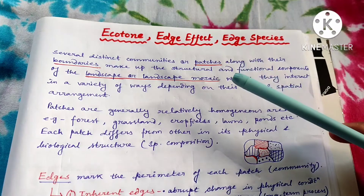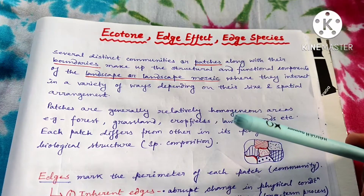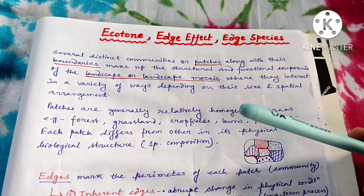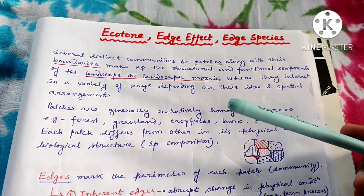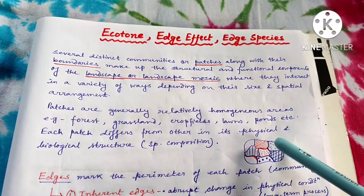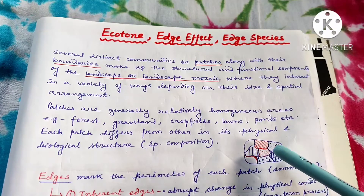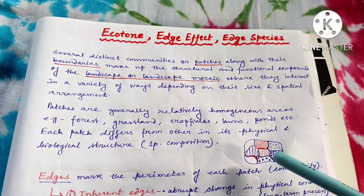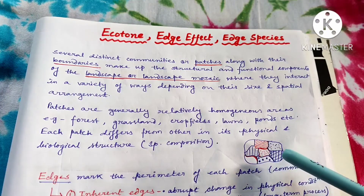Before knowing what is ecotone, we must know some related terms. Ecotone is nothing but a transitional zone between two different patches, or it is a wider border between two adjacent patches. So what is a patch? A patch is a structural and functional component of the landscape or landscape mosaic. In a landscape, there are different types of patches, all distinct from each other. We may also call it a landscape mosaic because, like a mosaic roof, it contains mosaics of different types of patches.